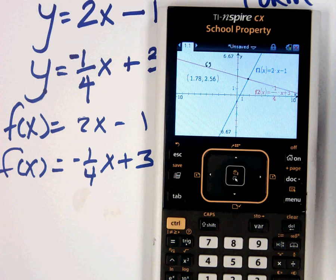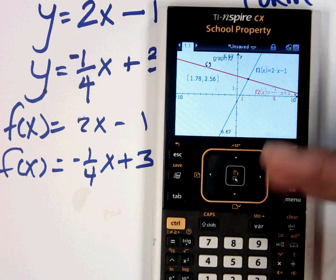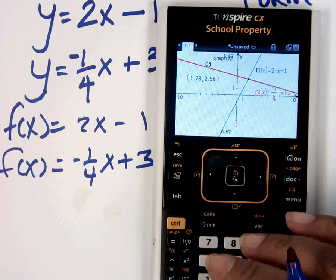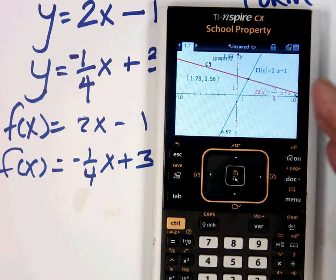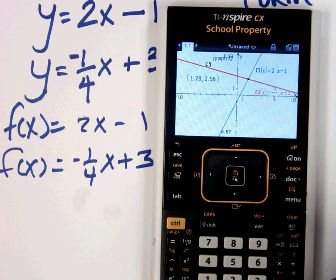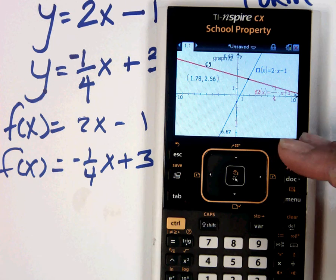So you can definitely see that it is 1.78, 2.56. All right. That is how you graph in the calculator using function, meaning it's already solved for y, and find the intersection where they cross.